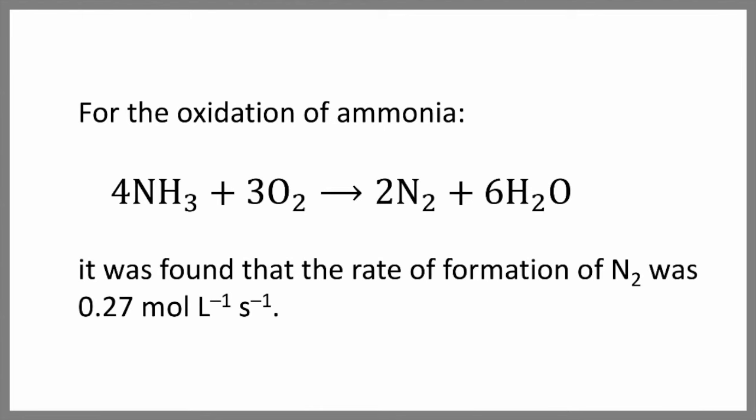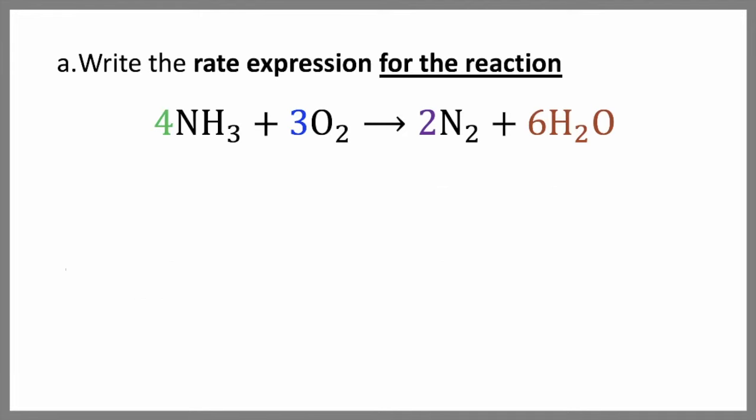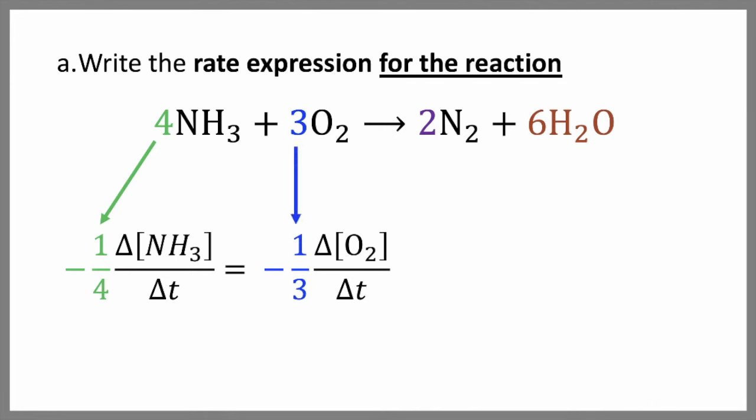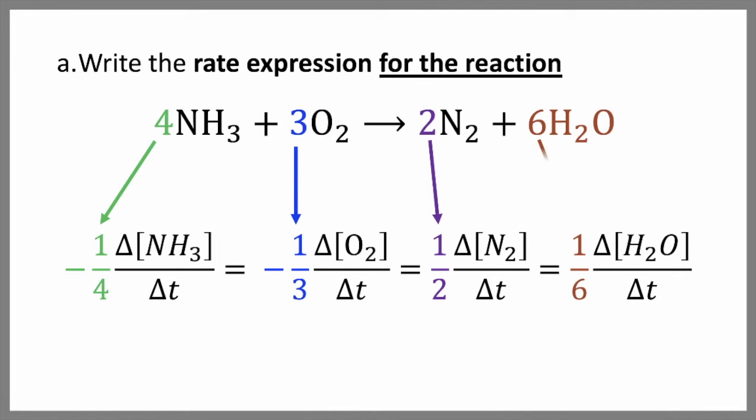Say that it was found that the rate of formation of nitrogen was 0.27 moles per liter per second. The first thing we are asked to do is write the rate expression for the reaction. To do this, we look at the coefficients in front of each species. We take the reciprocal of those and put them in front of the rate expressions for each individual species. And we have negative signs in front of the expression for ammonia and oxygen because those are our reactants and they're disappearing.